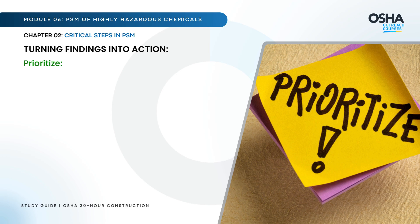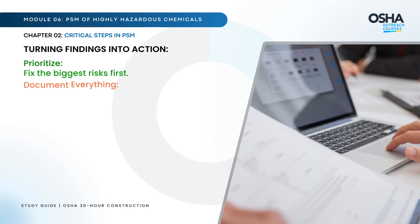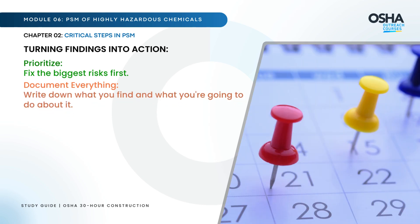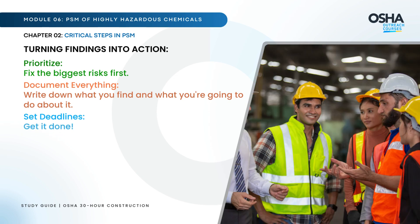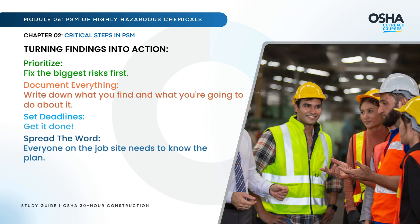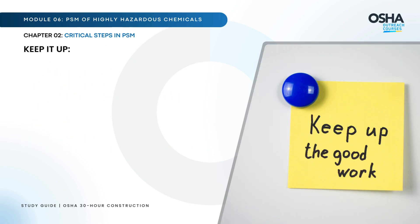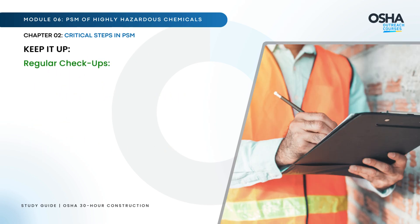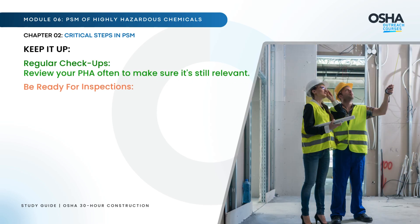Turning PHA findings into action: Prioritize — fix the biggest risks first. Document everything — write down what you find and what you're going to do about it, and set deadlines. Spread the word — everyone on the job site needs to know the plan. Keep it up — review your PHA regularly to make sure it's still relevant, and keep your paperwork in order for inspections.